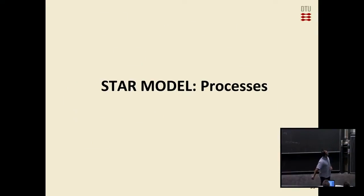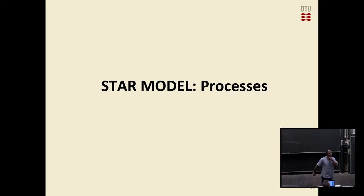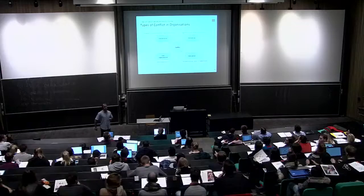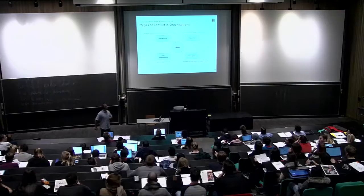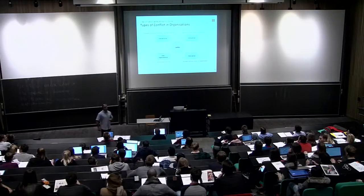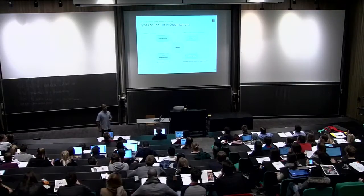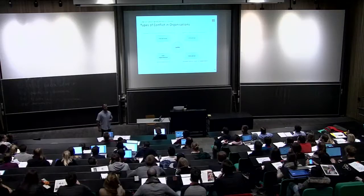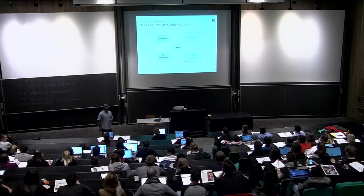So I understood that inter-organizational conflict is across the organization — it's not an external organization. Okay, then I didn't misunderstand. I'm just not being clear.